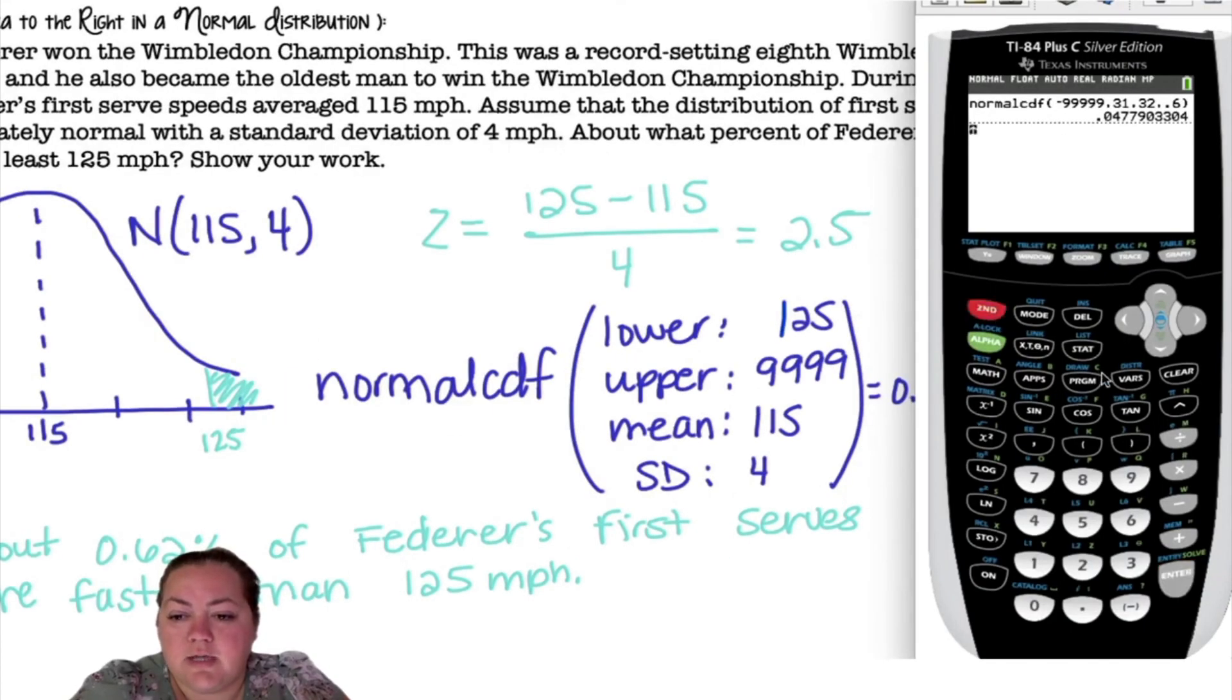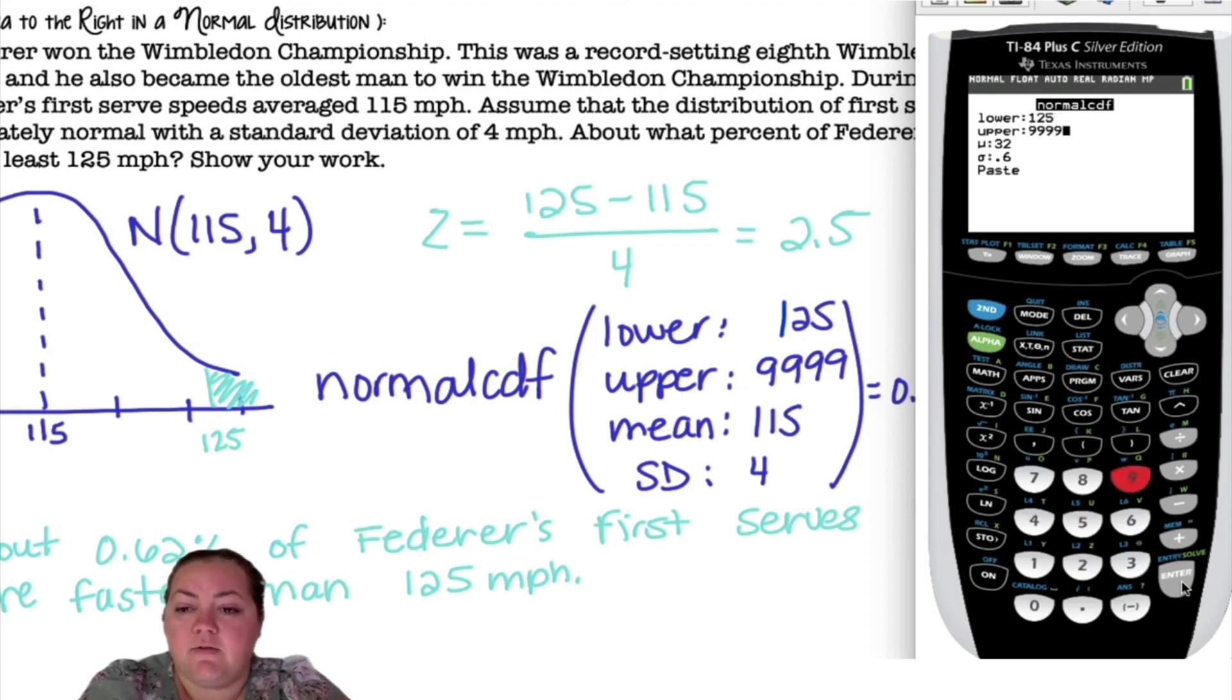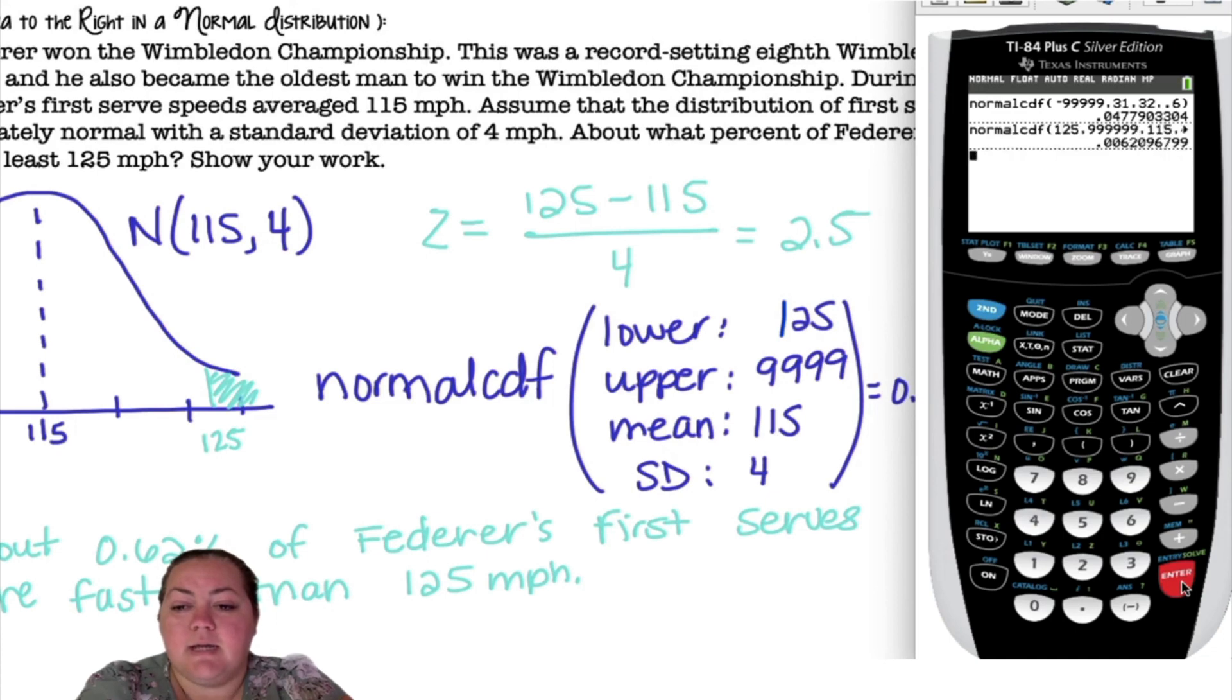We're going to go to second vars, which is our distribution menu. Normal CDF, which is the second option down. My lower bound is 125. My upper bound is positive infinity, so I'm going to put a bunch of nines. 115 is my mean and 4 is my standard deviation. I hit paste and enter and I get my answer.